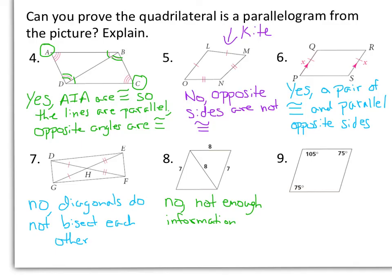Finally, number 9: we have one pair of opposite angles congruent, and we have consecutive angles which are supplementary. So number 9 is yes — opposite angles are congruent and consecutive angles are supplementary.